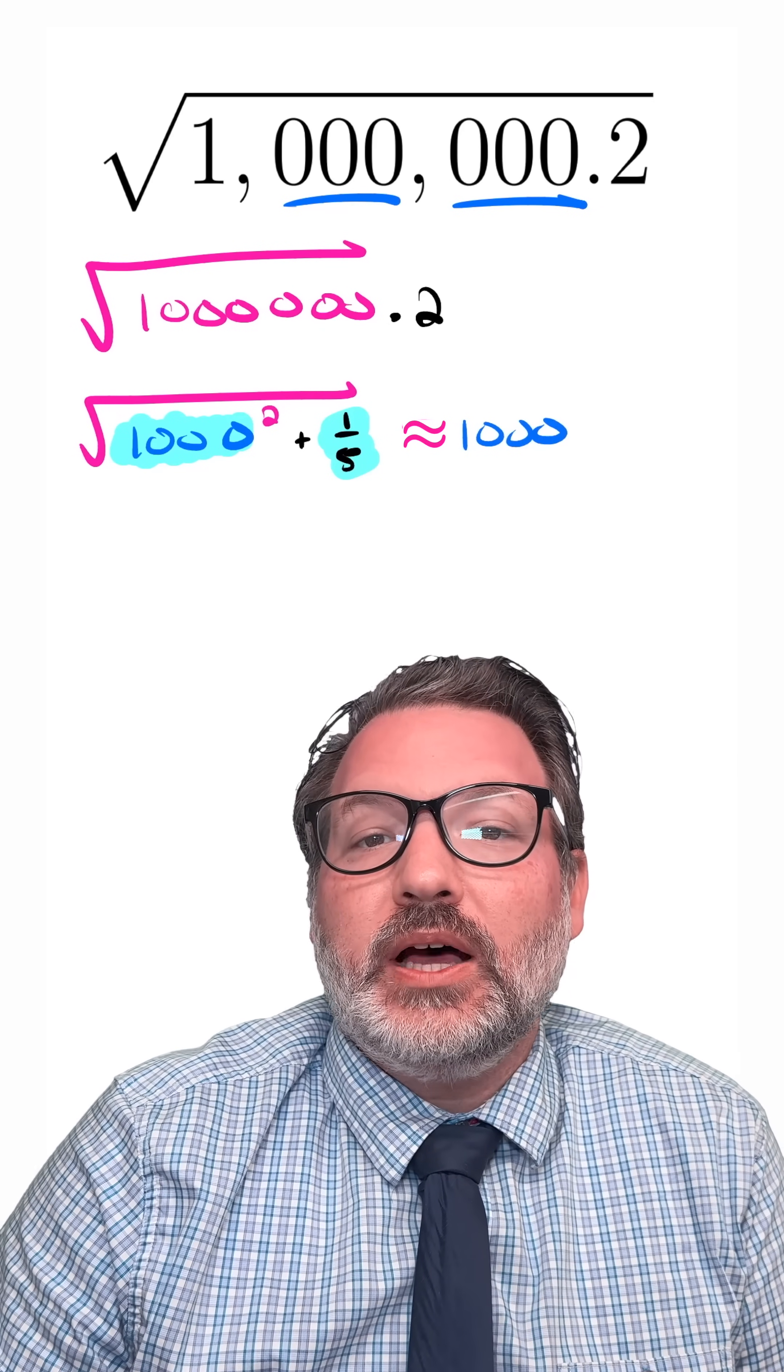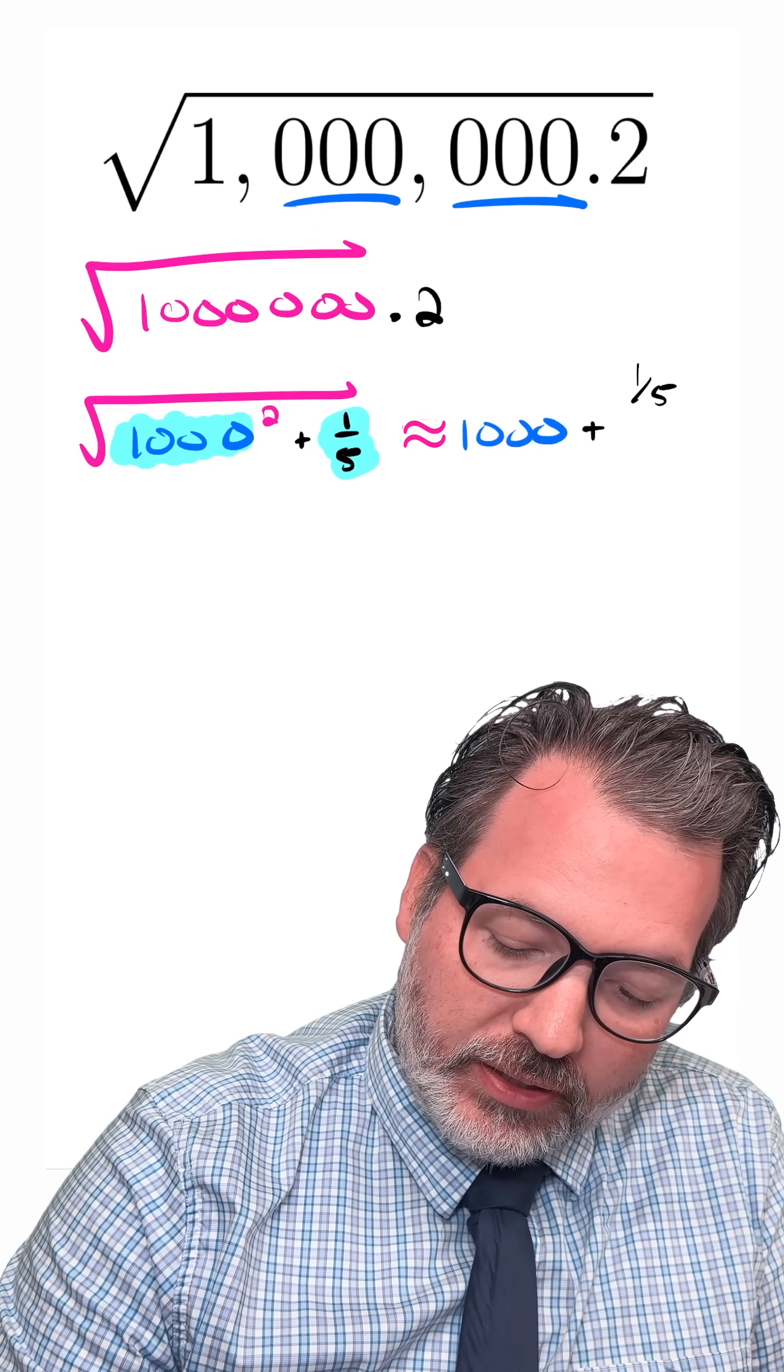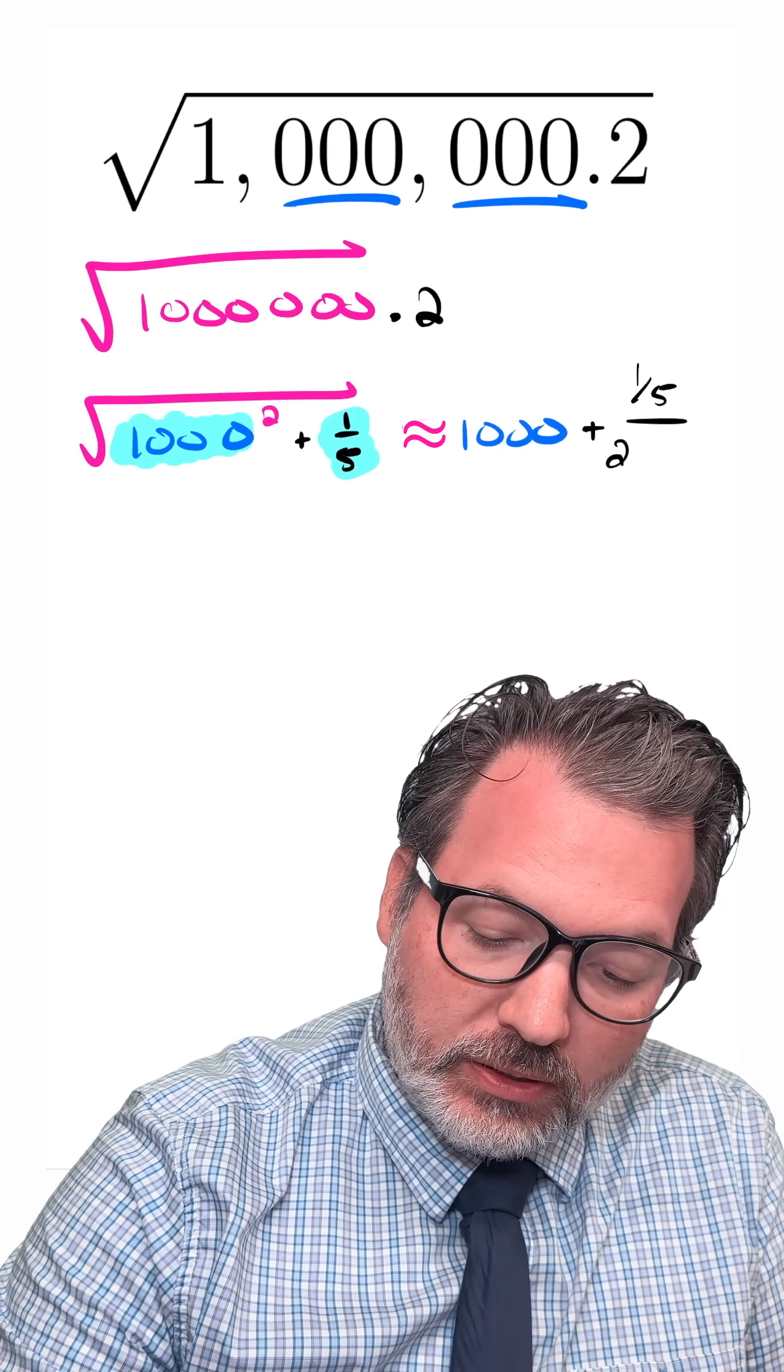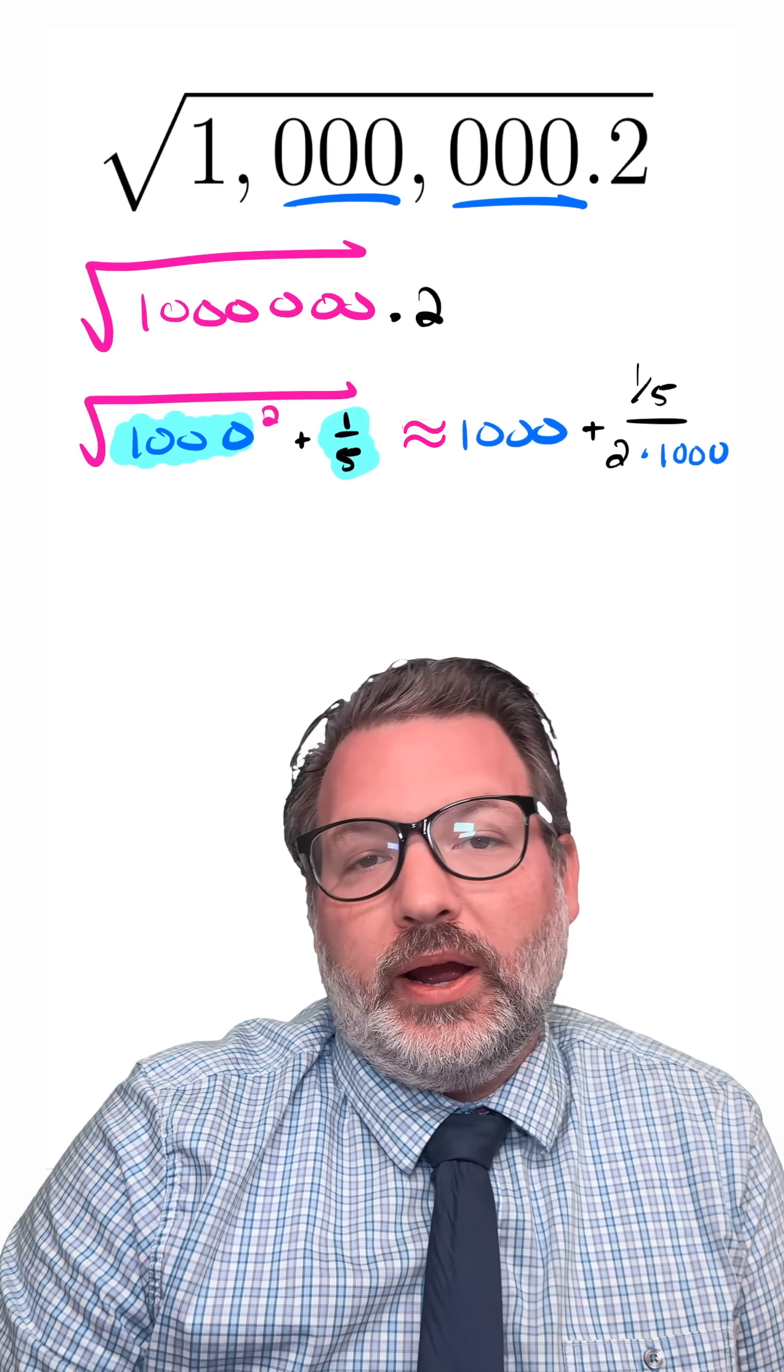So in this case, the square root of 1,000,000 is 1,000 plus whatever the smaller number is. So in this case, the 1/5 over 2 times that large perfect square root.